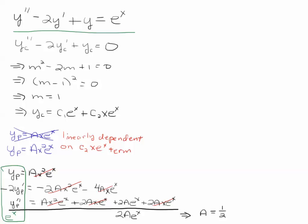And so, I plug that back into this particular solution. And I get one half x squared e to the x. And my complementary solution is over here. And so, for my general solution, I just add the complementary solution plus a particular solution. And that is it.